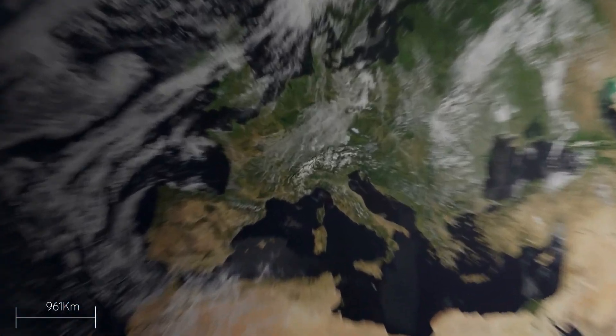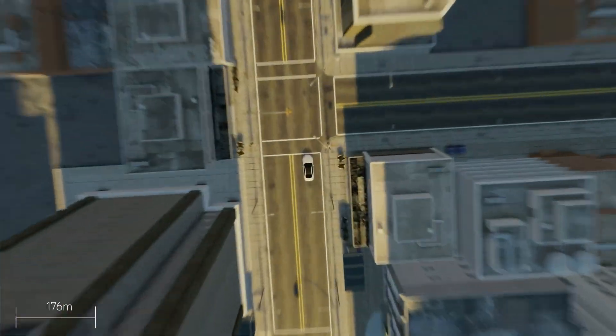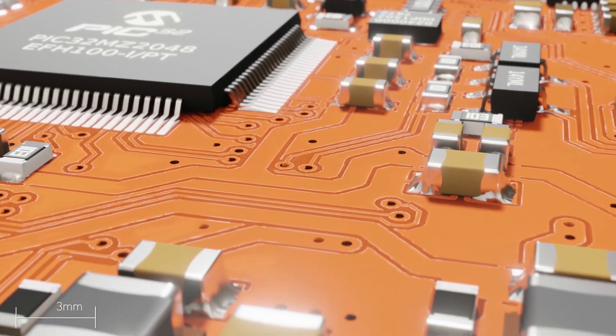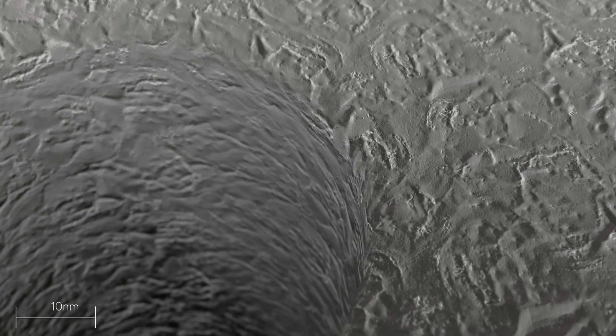Our everyday experience suggests that we can measure things exactly. To measure the distance between two objects better, we simply use a measuring tape with finer and finer marks.